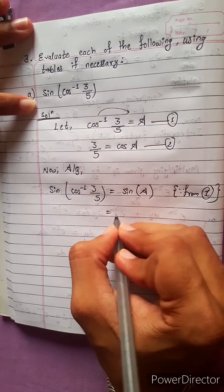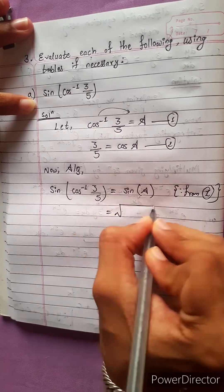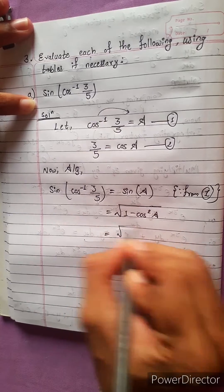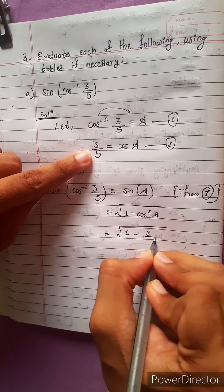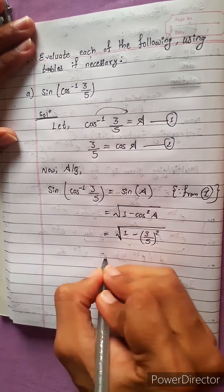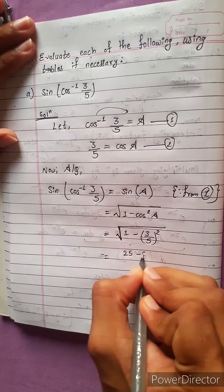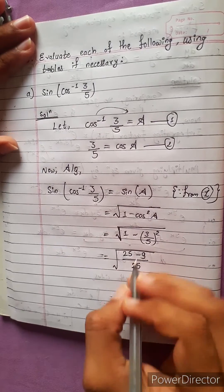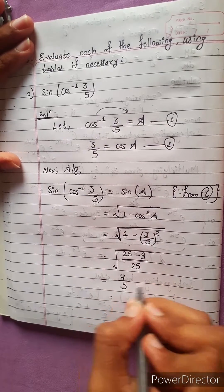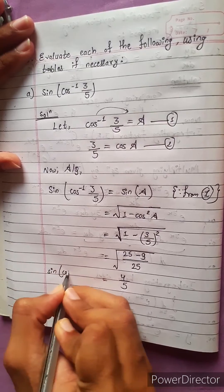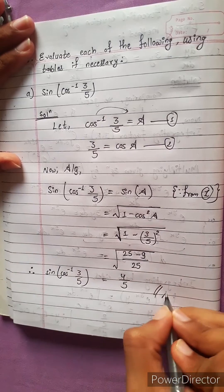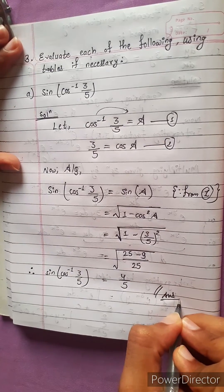Now, sine A in terms of cos A: sine A equals under root 1 minus cos squared A. This is the formula. So 1 minus cos squared A means 1 minus 3 by 5 squared, which gives 25 minus 9 upon 25 under the root, equal to 16 upon 25 under the root, which is 4 by 5. Therefore, sine of cos inverse 3 by 5 equals 4 by 5. This is our answer.